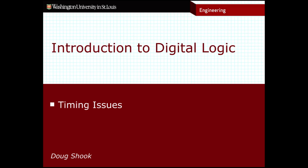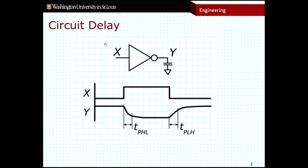The most important timing issue to be aware of is the concept of delay within our circuits and components. Here we see a very simple circuit — just an inverter. We can see that when x changes, in this case from low to high and then back from high to low, the output value y does not change instantaneously. There is some amount of delay before we can detect that change of x, before it makes its way through the inverter to the output and is reflected in y. That happens in both directions — going from high to low and from low to high.